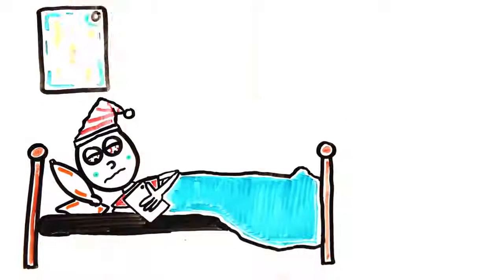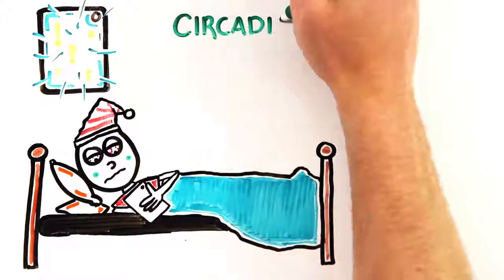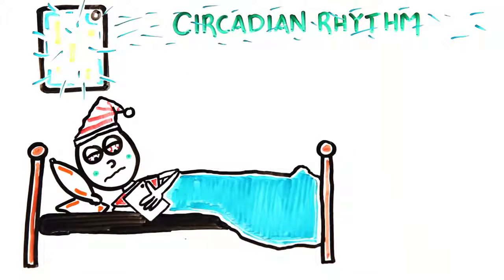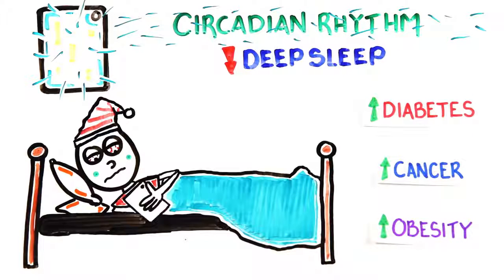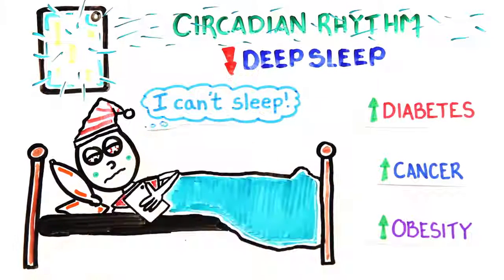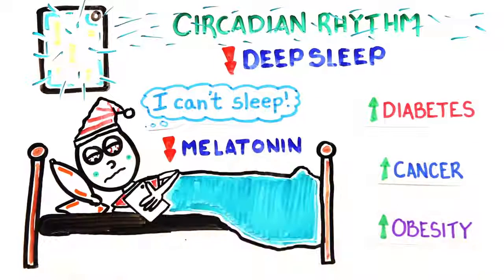The screen emits a blue light, which has been shown to alter our circadian rhythms, diminishing the time spent in deep sleep, which is linked to the development of diabetes, cancer and obesity. Studies have shown that people who read on their smartphone at night have a harder time falling asleep and produce less melatonin, a hormone responsible for the regulation of sleep-wake cycles.